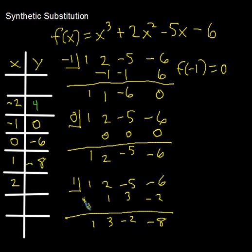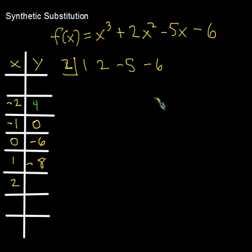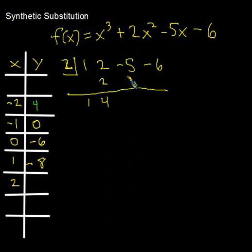Now let's try x equals 2 with coefficients 1, 2, negative 5, negative 6: 1 plus nothing is 1; 2 times 1 is 2; 2 plus 2 is 4; 2 times 4 is 8; 8 plus negative 5 is 3; 2 times 3 is 6; negative 6 plus 6 is 0. So when x is 2, y equals 0.